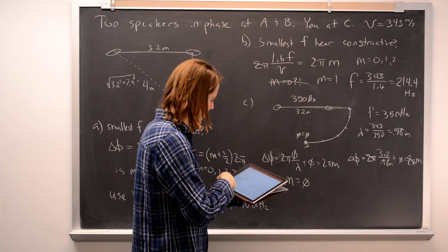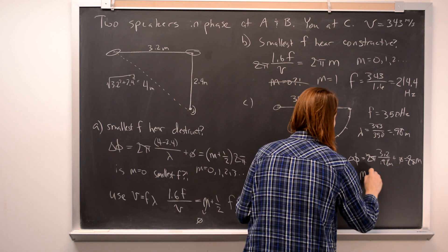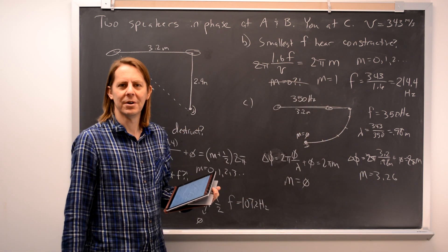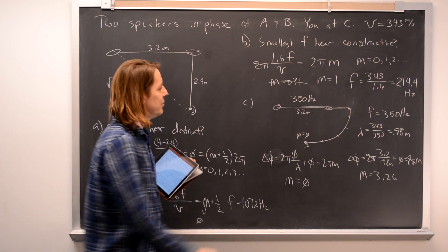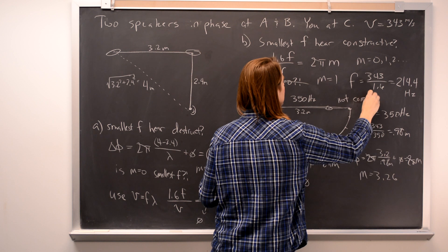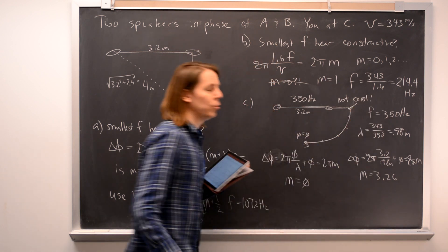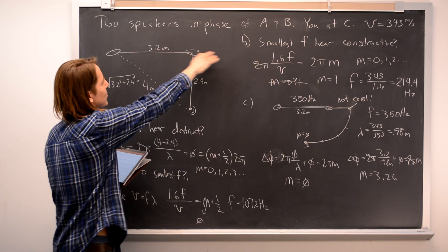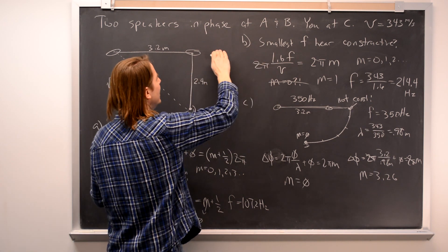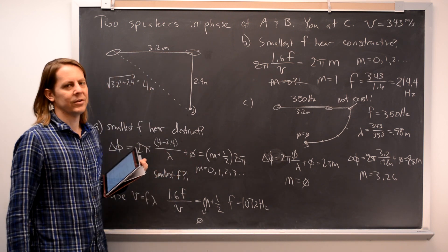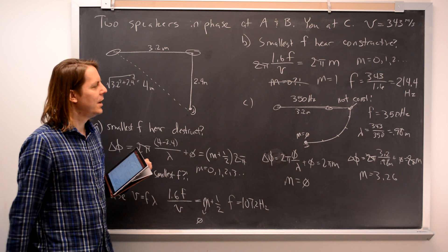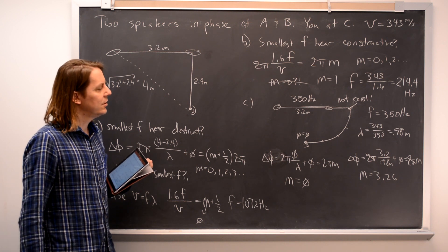But what does that mean, 3.26? M has to be an integer. What this means is that is not constructive. It's not one of the maximum on the axis. Just because it's on this axis doesn't mean it has to be constructive. So if you get M not an integer, then it's not constructive.